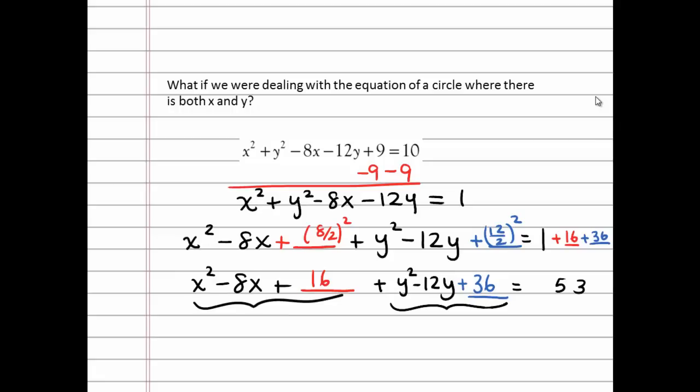Upon doing that, I can then factor each of the separate trinomials. So I get (x - 4)², and I get (y - 6)². Add them together, and then I get 53 on the right-hand side.